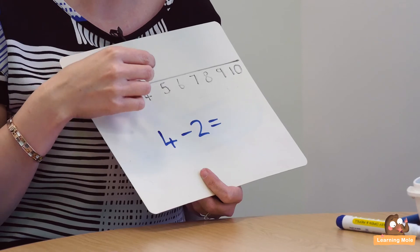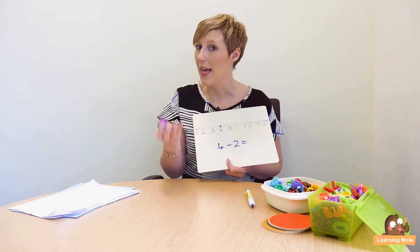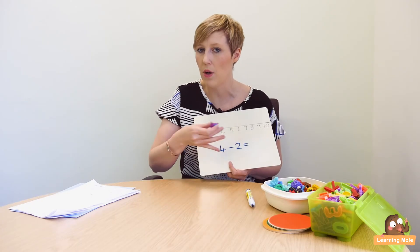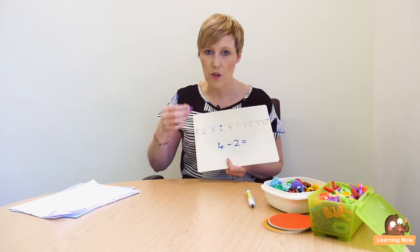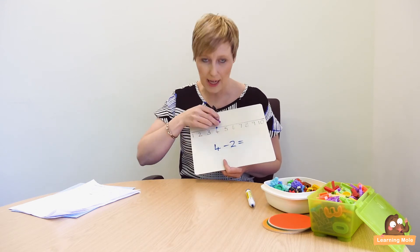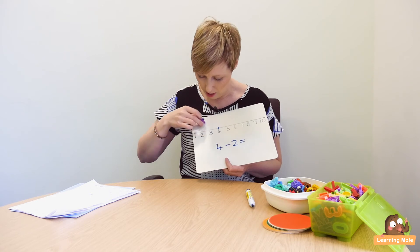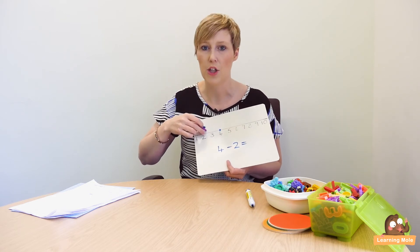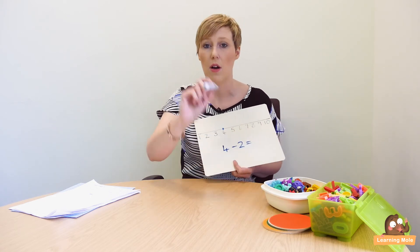Then we're going to say take away two, so that means you need to jump back two. Again, reinforcing that idea of counting backwards. Take away two, so we're actually moving backwards two. Let them physically move backwards. They're jumping one, two, and they land on the number two.